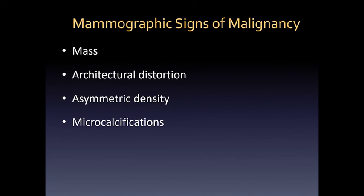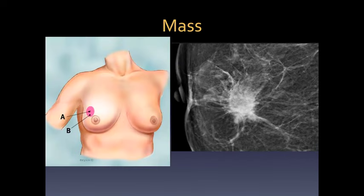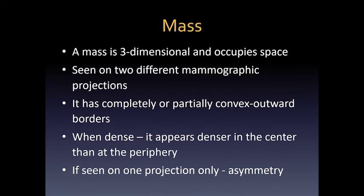There are four major mammographic signs of malignancy: a mass, architectural distortion, asymmetric density, and microcalcifications. A mass can be palpable or seen on the mammogram. They are defined as a three-dimensional space-occupying lesion seen on two different mammographic projections. It should have completely or partially convex outward borders, and when dense, should appear denser at the center than at the periphery. If we only see the mass on one projection, we should call it an asymmetry.